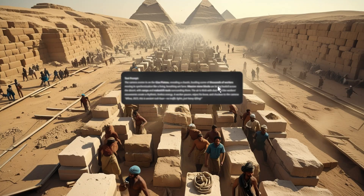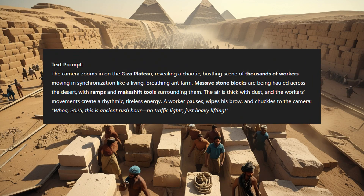The VO3 prompt I used here was: the camera zooms in on the Giza Plateau, revealing a chaotic, bustling scene of thousands of workers moving in synchronization, like a living, breathing ant farm. Massive stone blocks are being hauled across the desert, with ramps and makeshift tools surrounding them. The air is thick with dust, and the workers' movements create a rhythmic, tireless energy.